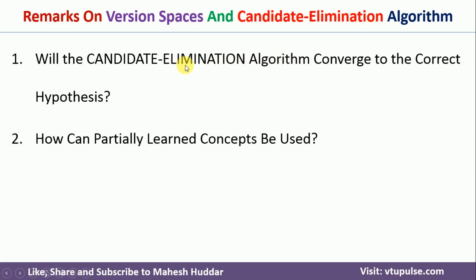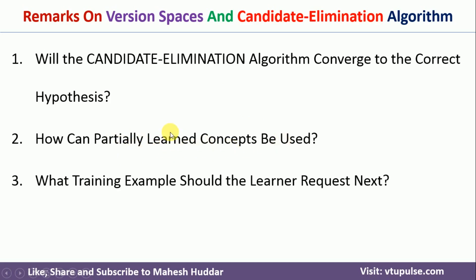The second remark is how a partially learned concept can be used to classify new examples. For example, you apply the candidate elimination algorithm and get the version space — it may contain one hypothesis or more. If it contains one, the concept is learned perfectly; if more than one, it is partially learned. The third remark is: if you have a partially learned concept, how do you get the perfectly learned concept by selecting new examples?